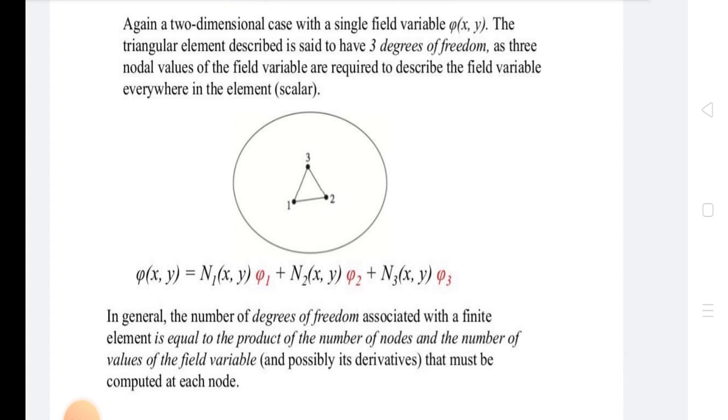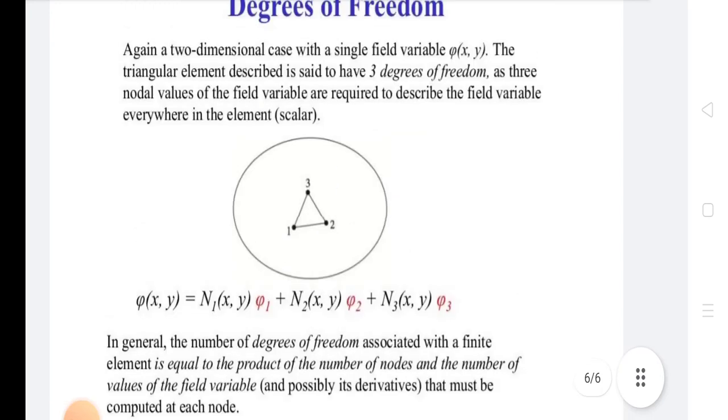In general, the number of degrees of freedom associated with a finite element is equal to the product of the number of nodes and the number of values of the field variable, and possibly its derivatives, that must be computed at each node.